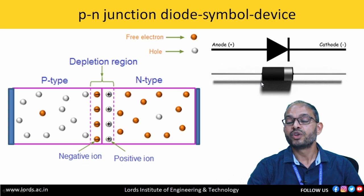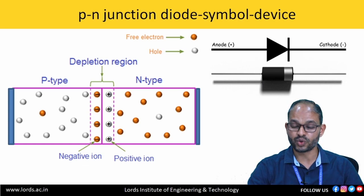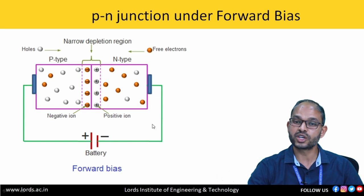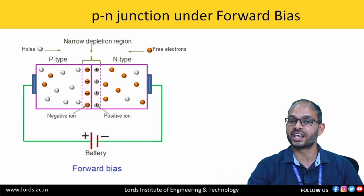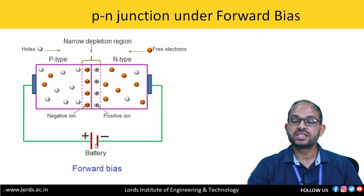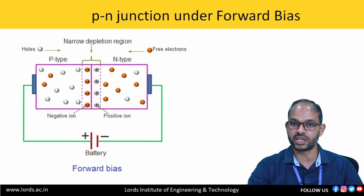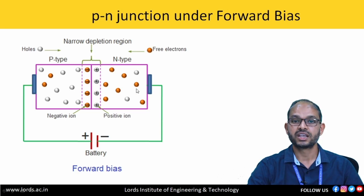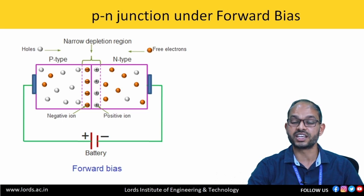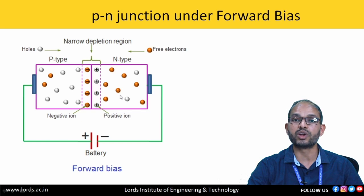When we apply external voltage to a PN junction diode, we call it biasing. The external voltage can be applied in two ways: positive of the battery connected to P-type and negative to N-type, which we call forward bias; or negative of the battery connected to P-type and positive to N-type, which we call reverse bias.